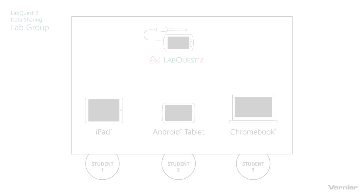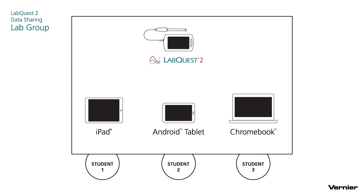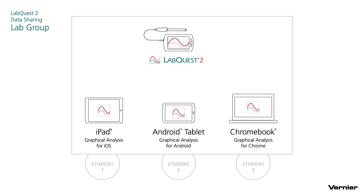Students could have a variety of mobile devices — iPads, Android tablets, Chromebooks, smartphones, whatever it may be. In each case, the lab group has a single set of sensors connected to the LabQuest. On each student's device is the free Graphical Analysis app. We have Graphical Analysis for iOS, Graphical Analysis for Android, and Graphical Analysis for Chrome. All of these are free on their respective app stores.